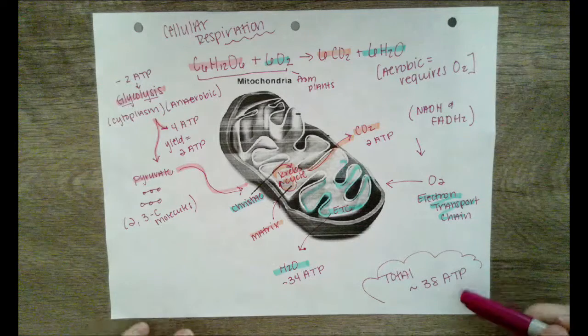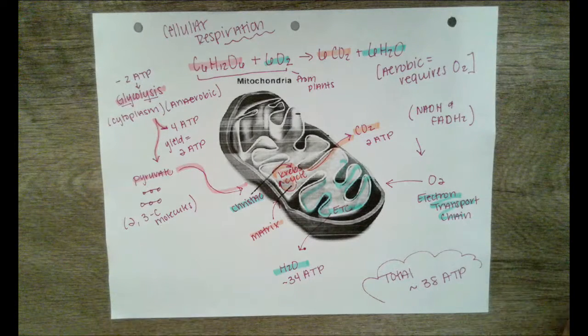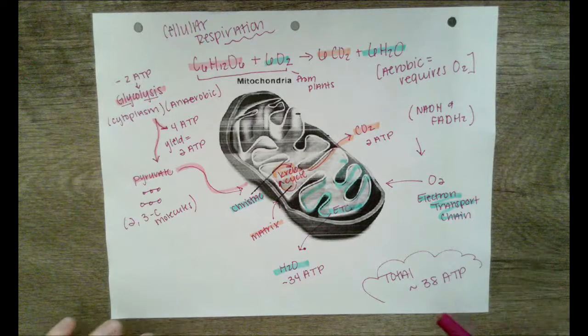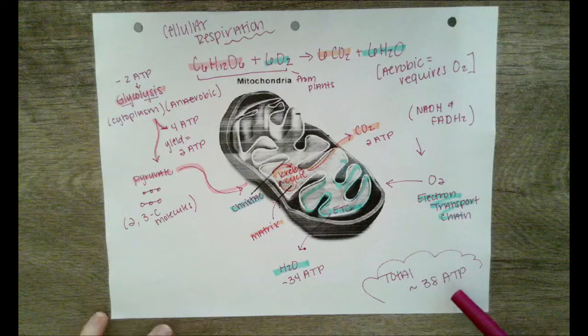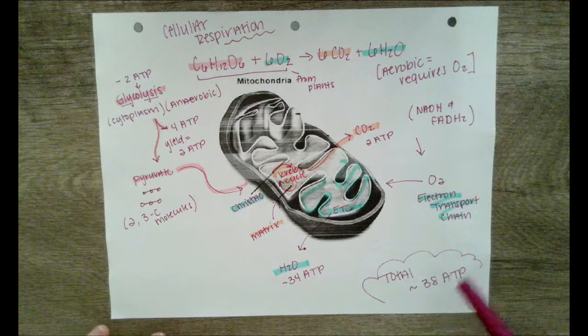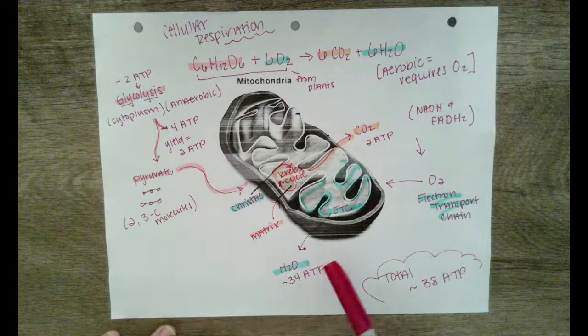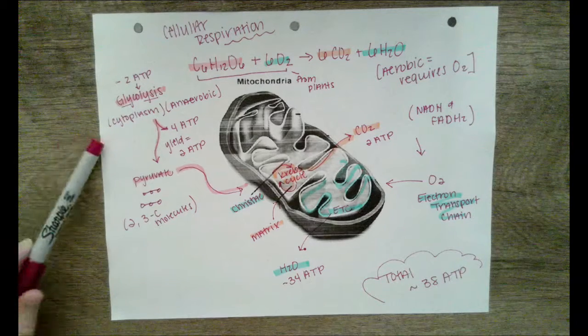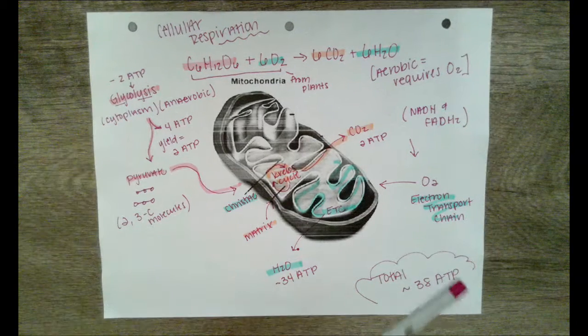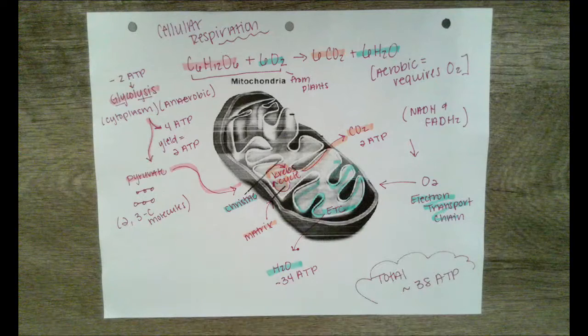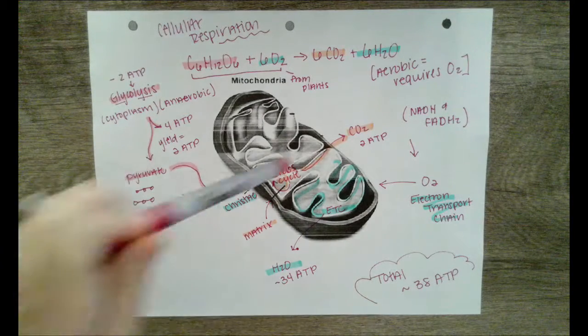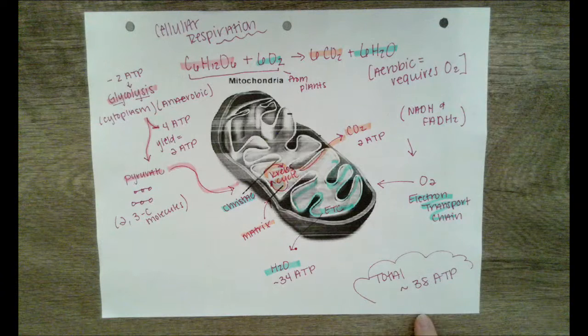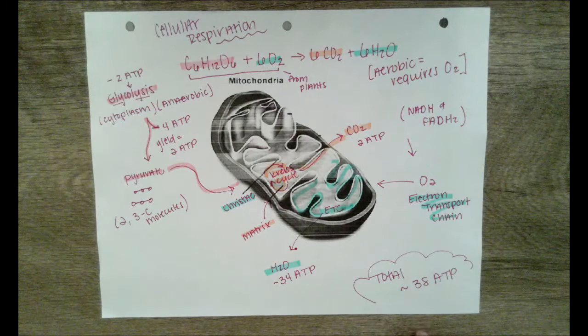The total ATP that we get varies depending on how efficient the cycle is. Typically, you can get about 38 ATP from one cellular respiration run. We have three parts: glycolysis, the Krebs cycle, and the electron transport chain yielding two, two, and 34 ATP for a grand total of about 38 ATP. Again, this number can fluctuate.